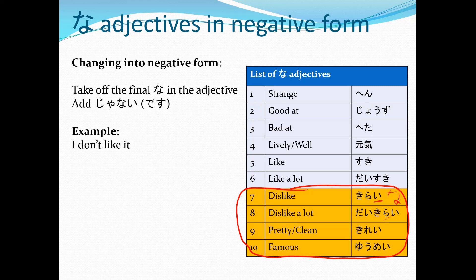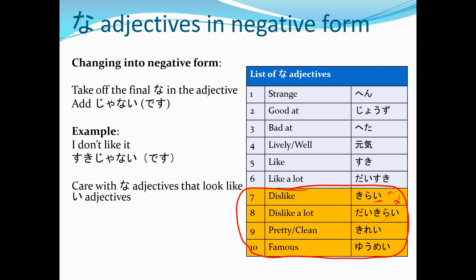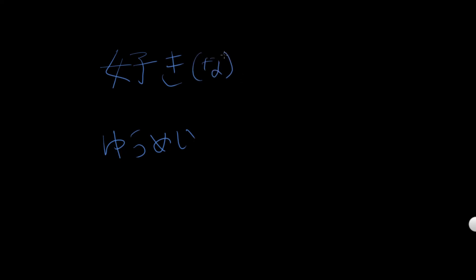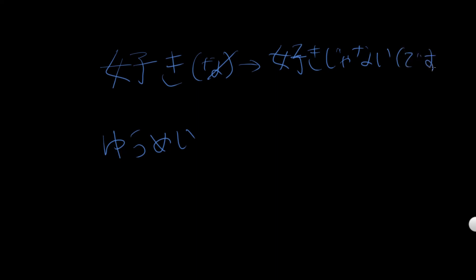So, take off the な and add じゃないです. For example, I don't like it: すき じゃないです. Be careful with the な adjectives that look like イ adjectives. For example, I don't dislike it — a bit passive-aggressive — 嫌いじゃないです. But you don't like it, so... You read that kanji as すき — it's a な adjective. Take off the な and add じゃない: すきじゃないです. Depending on your context.